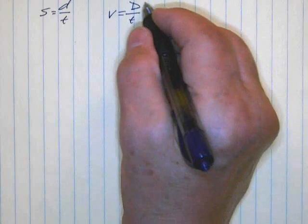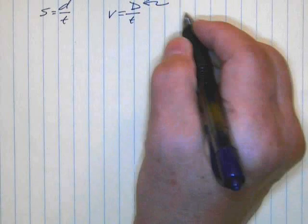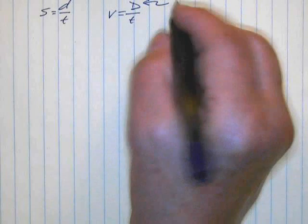is displacement divided by time. The difference here is that the displacement has to include a direction.